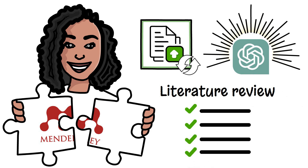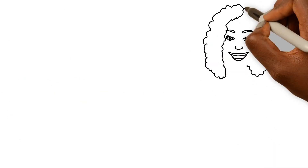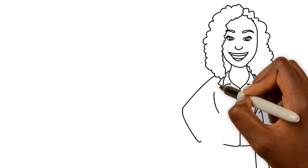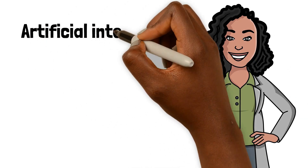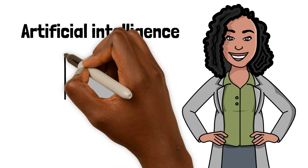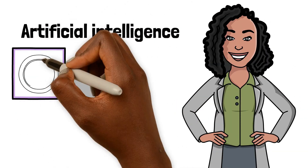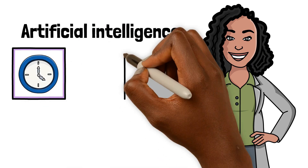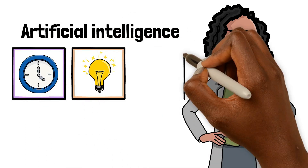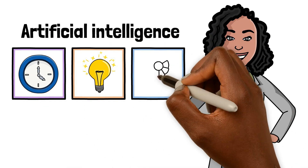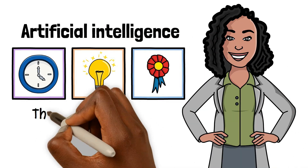And there you have it — a step-by-step guide to using artificial intelligence to conduct rapid literature reviews. By following this process, you can save time, produce high quality work, and take your research to the next level.